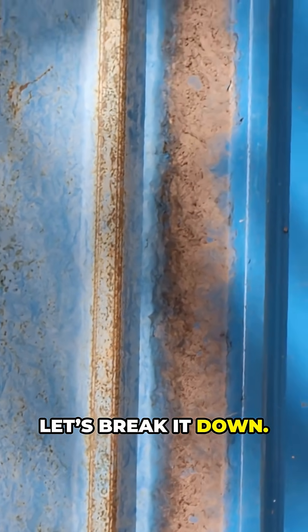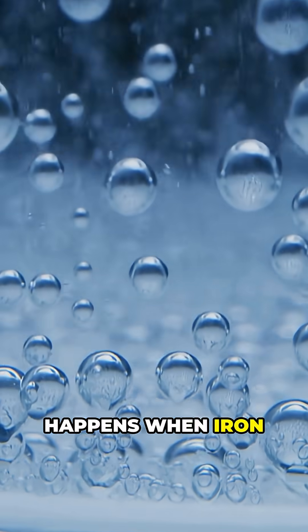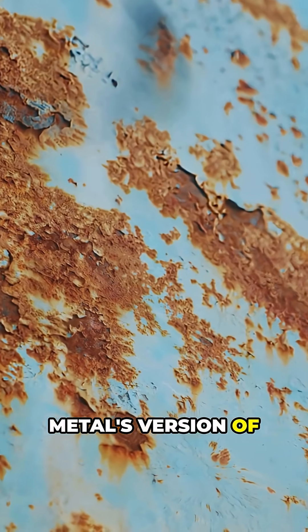Why? Let's break it down. Rust is what happens when iron meets oxygen and moisture. Think of it as metal's version of aging badly.